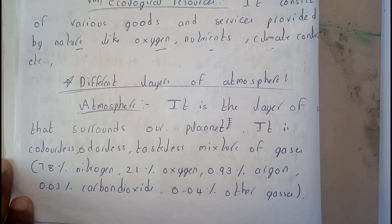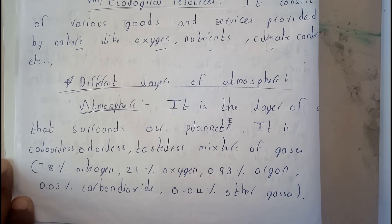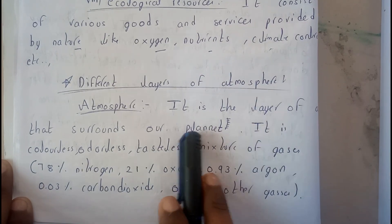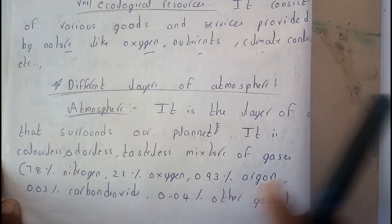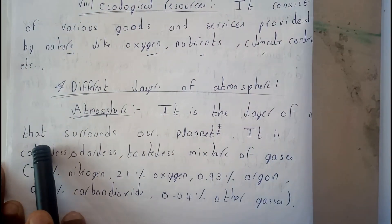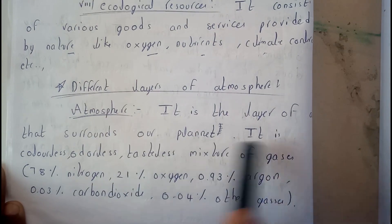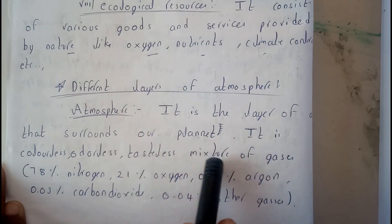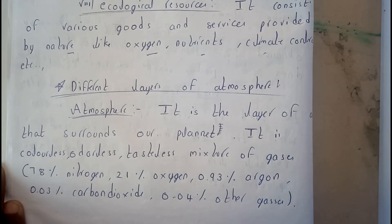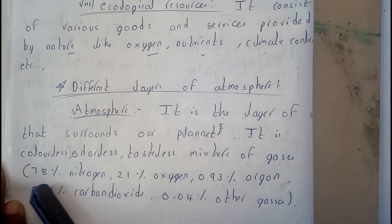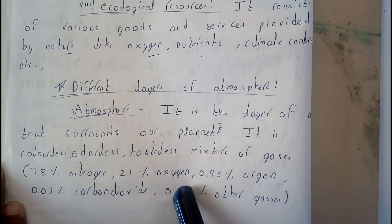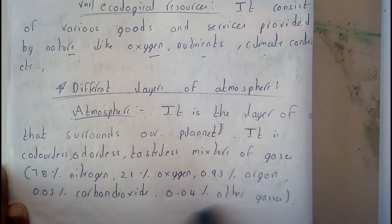In this tutorial, let's see all about different layers of atmosphere. Basically, what is atmosphere? Everything surrounding us above the land is the atmosphere. It is a layer of air that surrounds our planet. It is a colorless, odorless, tasteless mixture of different gases: 78% of nitrogen, 21% of oxygen, 0.93% of argon.